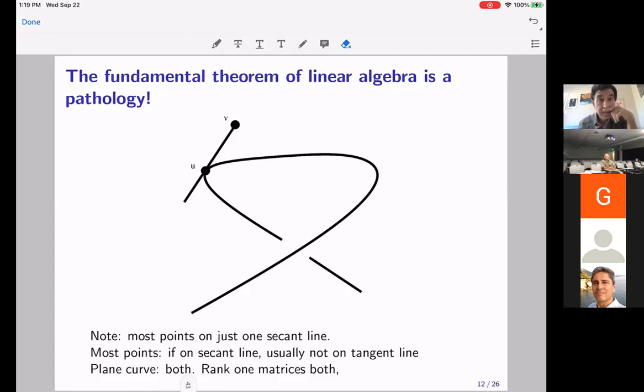So I want to explain to you that the fundamental theorem of linear algebra is a pathology. So why did not Bini know about this? Because for matrices, this phenomena does not happen. If you get close to a rank seven matrix, you will converge to it. Now, the point is that if you have a curve in space, if a point lies on a secant line, in general, it will just lie on one secant line. And if it lies on a tangent line, it will not lie on a secant line. Now, this is false for curves in the plane. If you have a curve in the plane, it'll actually lie on a positive dimensional family of secant lines and some tangent lines. But a space curve, generally not.